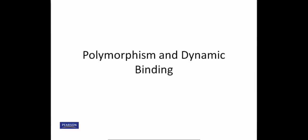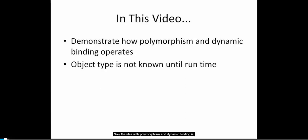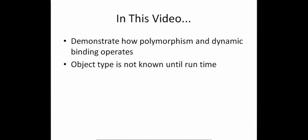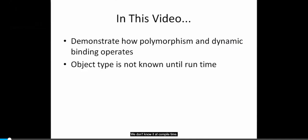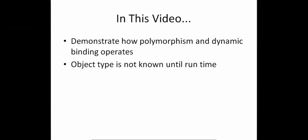In this video, we're going to be demonstrating how polymorphism and dynamic binding actually works. The idea with polymorphism and dynamic binding is we don't actually know the exact type of an object until the program actually runs — we don't know it at compile time. What this means is that when we have some code, the specific method that gets called — say we have two objects that extend from the same subclass — we don't actually know that until the program runs.